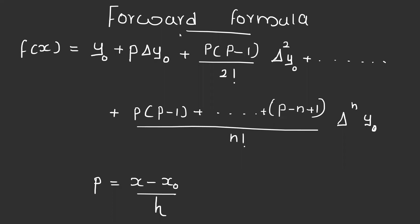Newton's forward interpolation formula: f(x) = y₀ + p·Δy₀ + p(p-1)/2! · Δ²y₀ + ... + p(p-1)···(p-n+1)/n! · Δⁿy₀. This is Newton's forward interpolation formula.